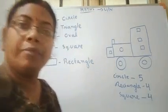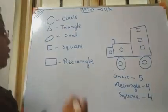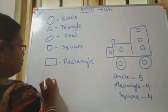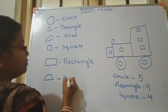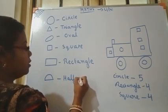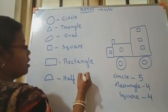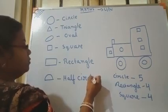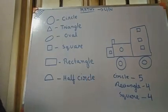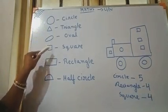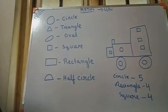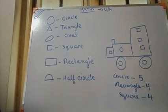And you should remember. I have taught you half circle. Half circle. So this is circle, triangle, oval, square, rectangle, half circle. So this thing you remember, children, always.